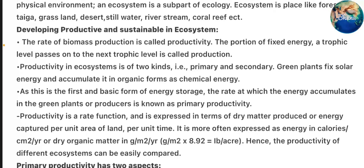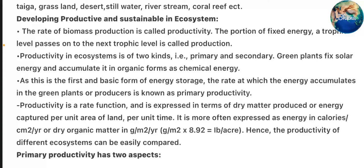Developing productive and sustainable ecosystems. The rate of biomass production is called productivity. The portion of fixed energy a trophic level passes onto the next trophic level is called production. Productivity in ecosystem is of two kinds: primary and secondary. Green plants fix solar energy and accumulate it in organic forms as chemical energy. The rate at which the energy accumulates in the green plants or producers is known as primary productivity. Productivity is a rate function and is expressed in terms of dry matter produced or energy captured per unit area of land per unit time.